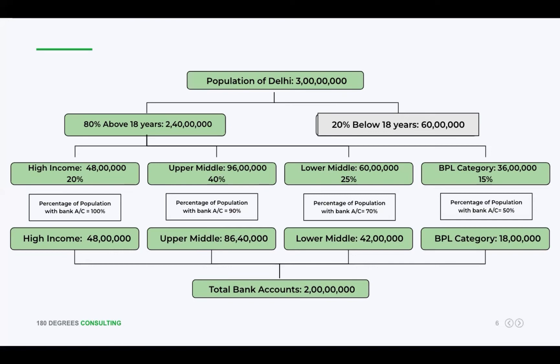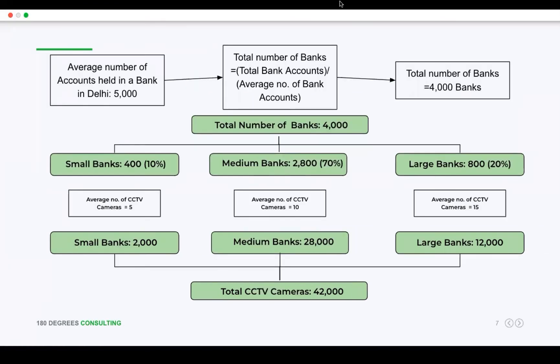So the total number of bank accounts is 2 crores. That seems fair. Then I'll consider the average number of accounts held in a bank in Delhi to be 5,000. Is that all right? Yes, that's fine. So to arrive at the total number of banks in Delhi, I'll divide the total number of bank accounts by the average number of accounts held per bank, which comes out to be 4,000 banks in Delhi.